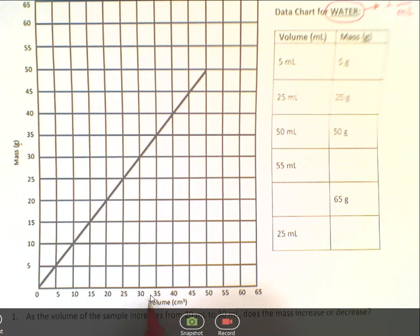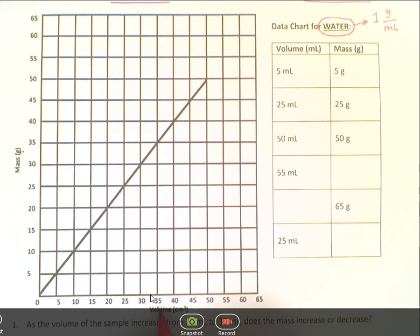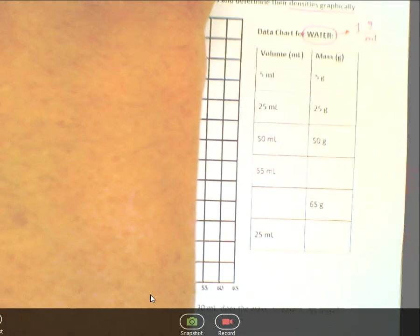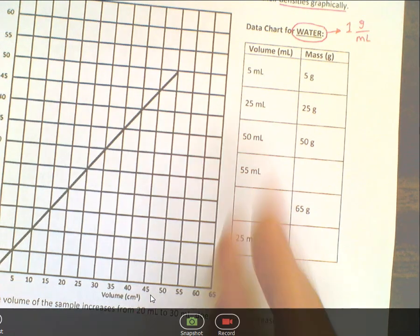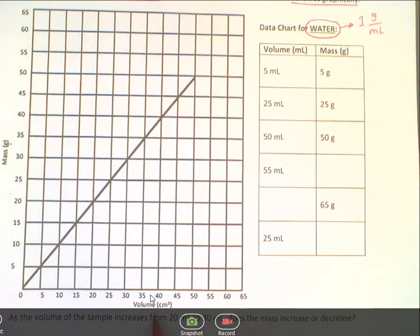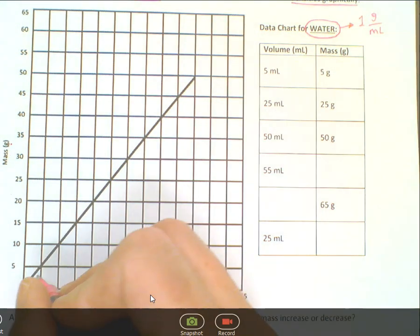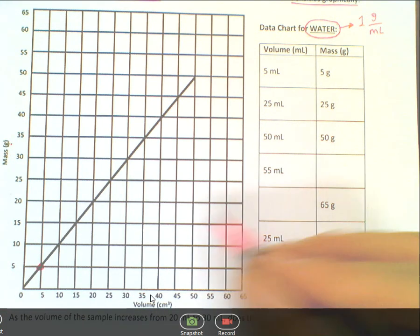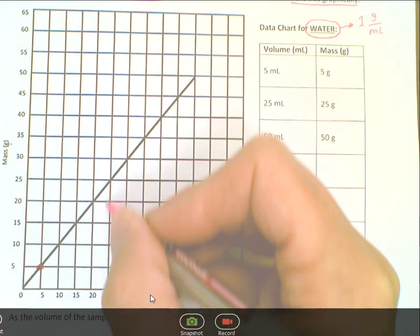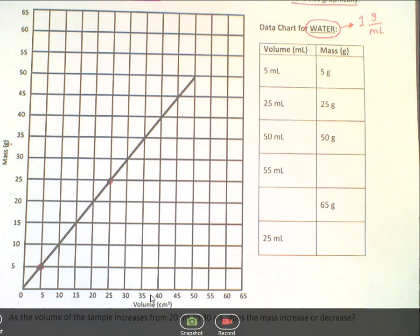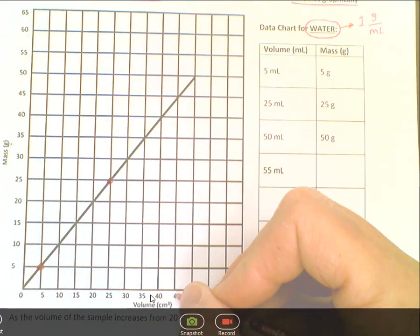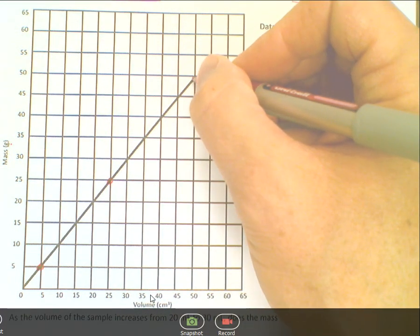On the bottom, it says volume, and that's in cubic centimeters. So that's down in the bottom part right here. First part is 5 milliliters, so we find 5 milliliters and 5 grams, put a little dot. Then we find 25 milliliters and 25 grams right there. Then we find 50 milliliters and 50 grams, and there we are.